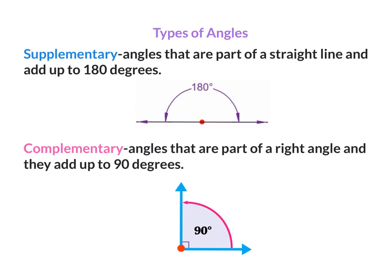Types of Angles. The first one is a supplementary angle. These are angles that are part of a straight line and they add up to 180 degrees. The next one is complementary angles. They are angles that are part of a right angle and they add up to 90 degrees.